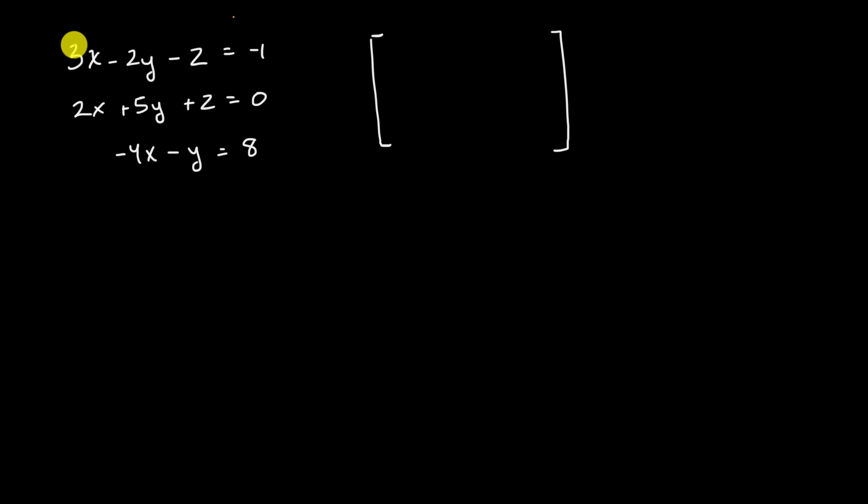So for example, let me get all of the X coefficients, a three, a two, and a negative four. And I'll put it in this first column here. Three, two, and negative four.